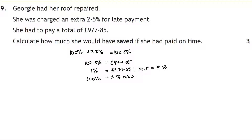977.85 ÷ 102.5 = 9.54, and 9.54 × 100 = £954. So the original bill was £954. This is your classic reverse percentage question — divide by 102.5 then multiply by 100 is the key step.